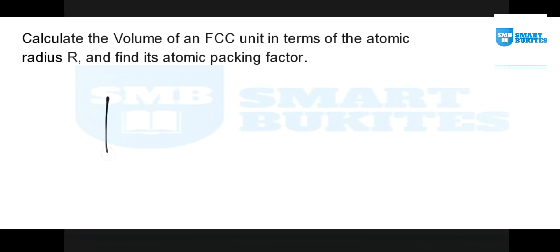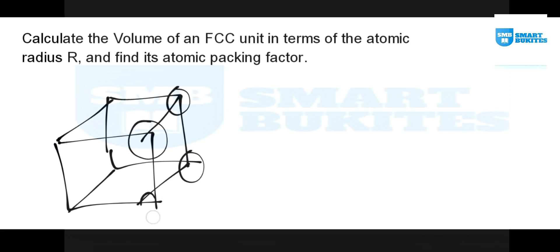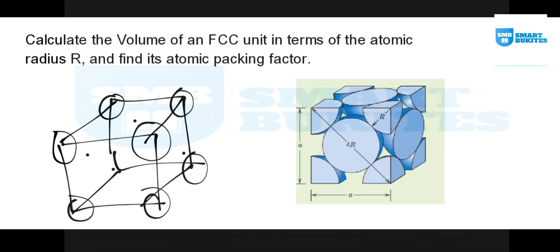We all know that the FCC, that's the face-centered cubic, has atoms at all edges of the cube, then there's another one at each face. To understand it more, see this picture — it shows only the part of the atoms that contributed to the unit cell of the FCC cube. We can see that at each face there are atoms contributing at the edges, and there's also one that contributes at the face of the cube.